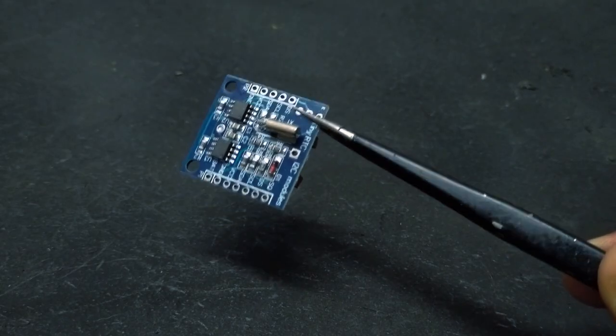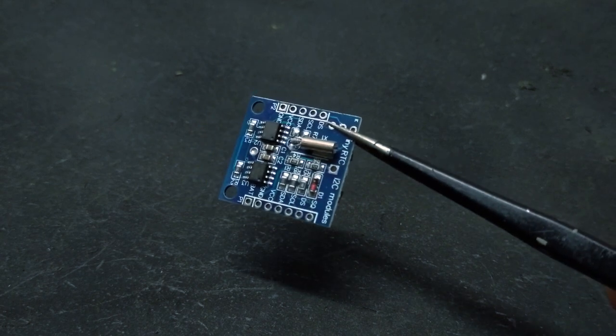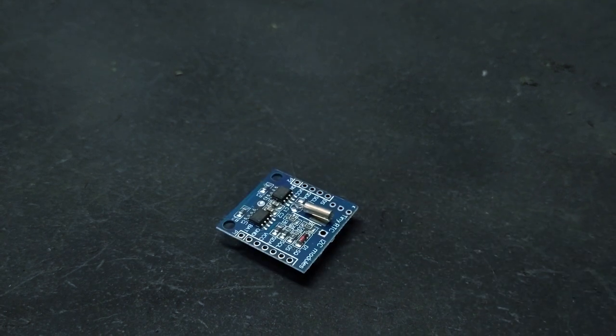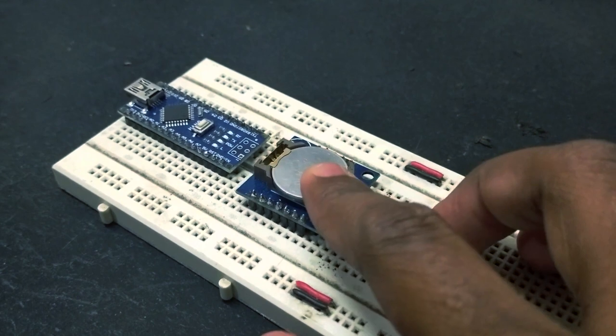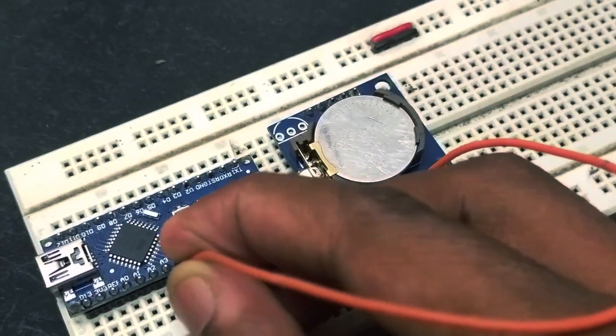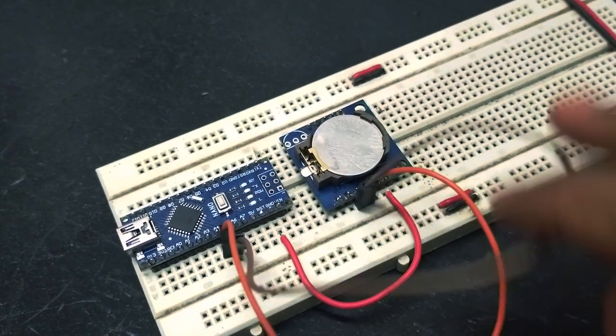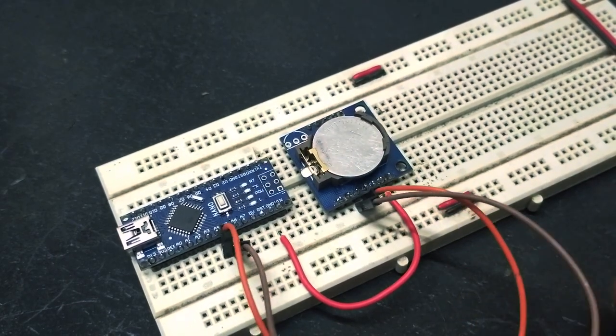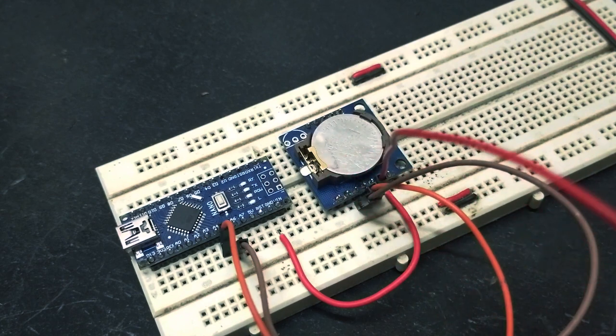For now, first we'll stick to the RTC module. The RTC module has a battery which keeps track of time even when the main power is disconnected to the circuit. To set up the RTC, connect the SDA-SCL pin of the RTC module to A4 and A5 of the Arduino, then connect the power supply to VCC and ground.